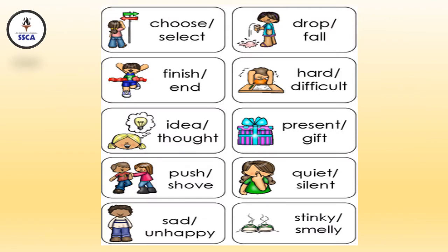Let's understand synonyms with the help of some examples. Here are some examples: choose or select — both are the same. Drop or fall, finish or end, hard or difficult — they are also the same. Idea and thought, present or gift, push or shove, quiet or silent — both are the same. Sad or unhappy — sad means unhappy.